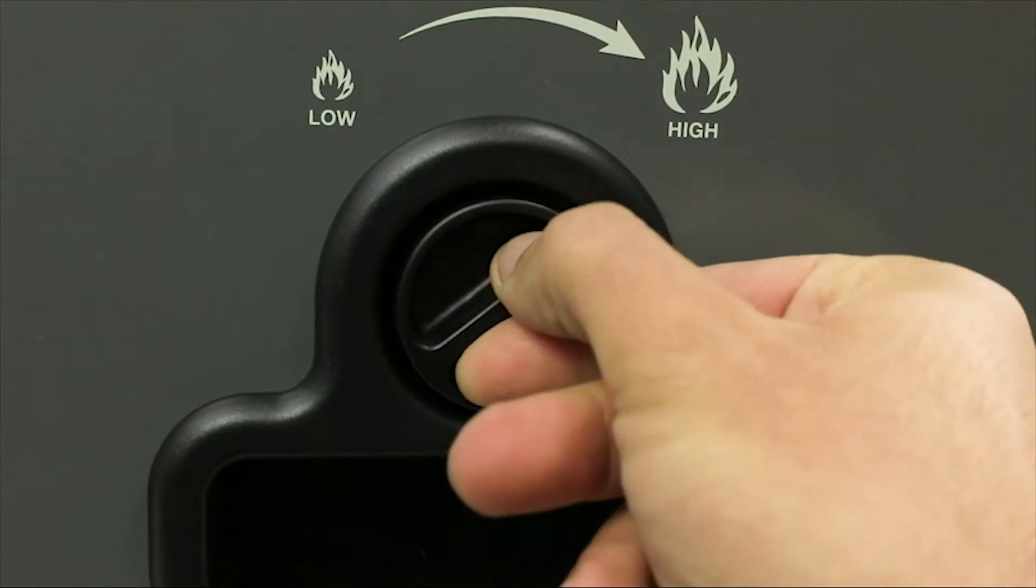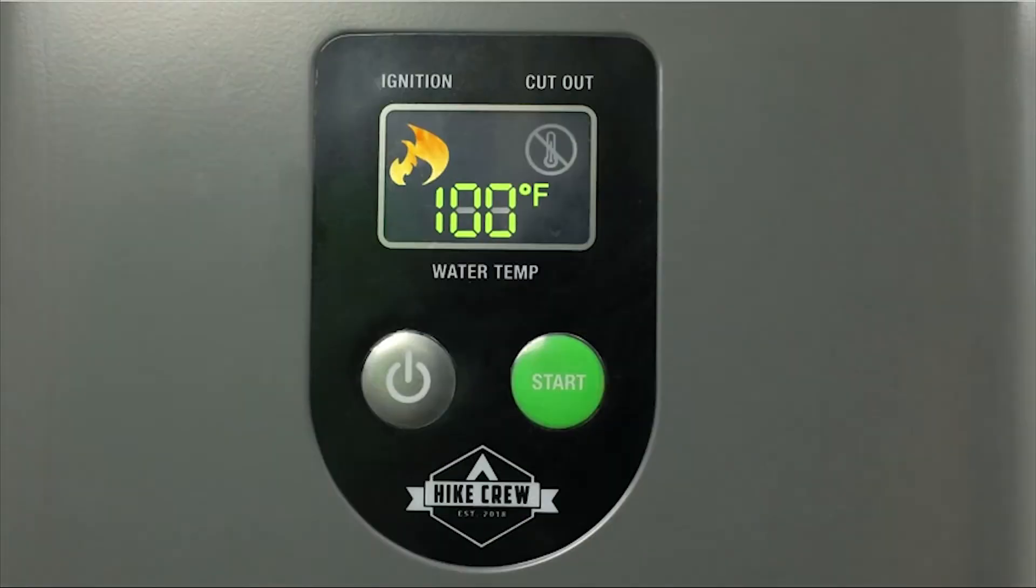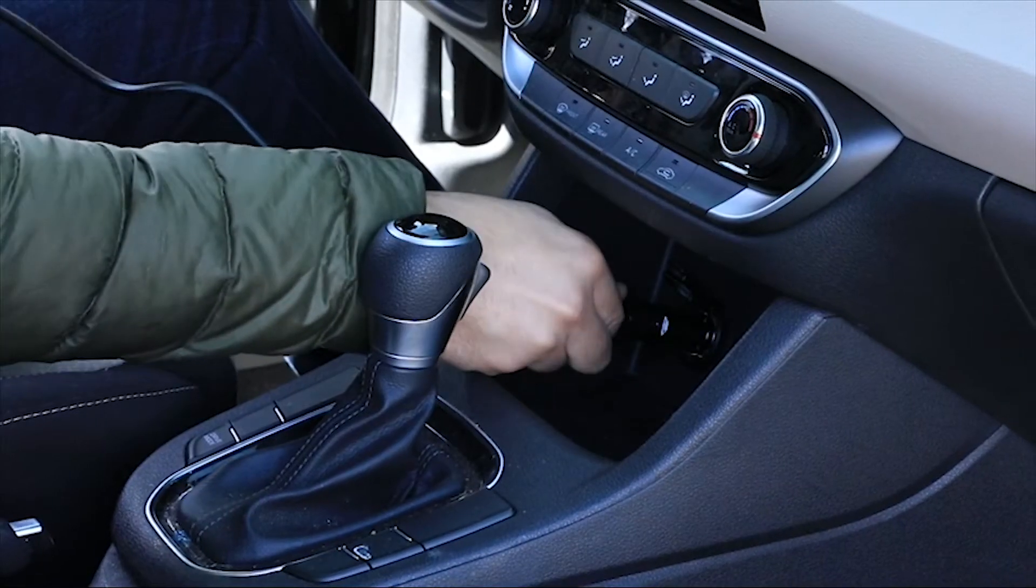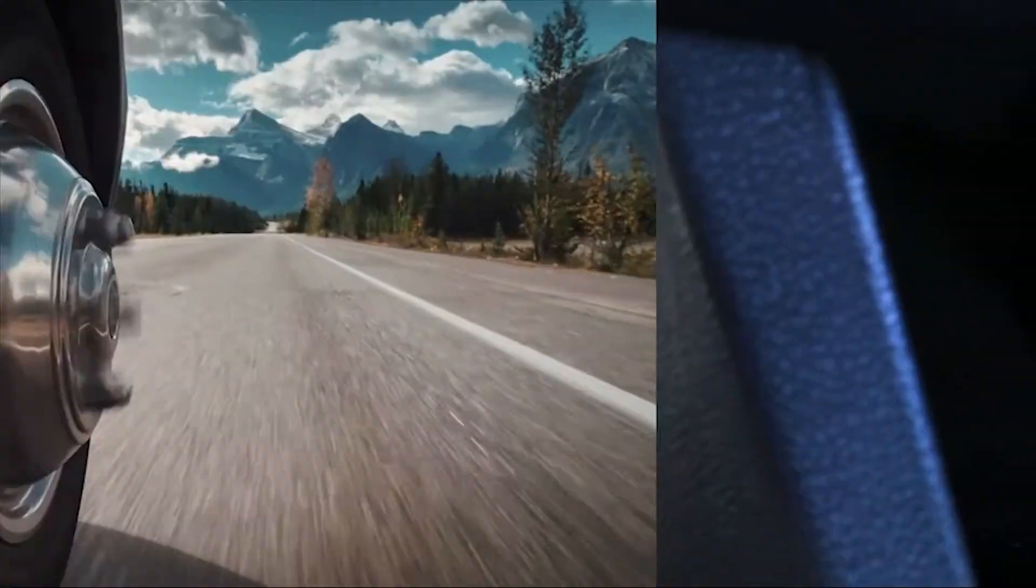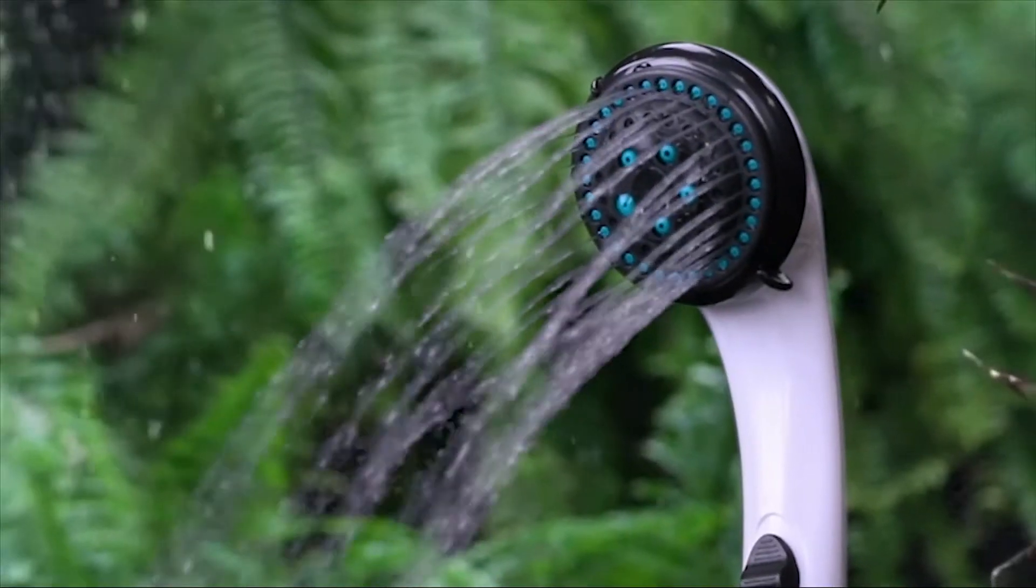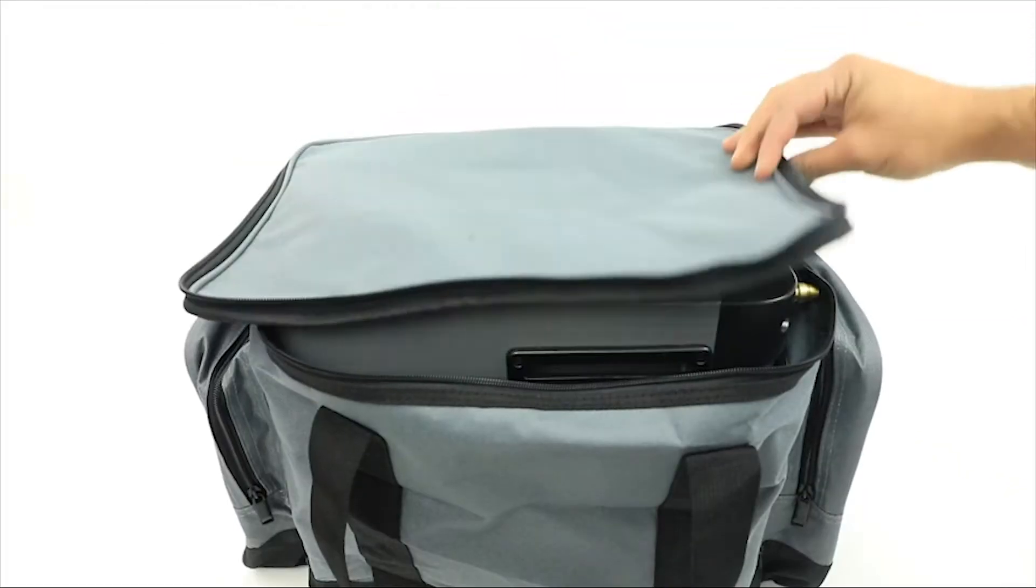The temperature control knob lets you adjust the flame size and the LCD screen displays the water temperature to help you dial in the perfect temperature. Plug it in anywhere with included power adapters that work with standard outlets and car cigarette lighters. Great for camping and RV trips. The variety of water ports and accessories give you everything you need for a comfortable shower anywhere.